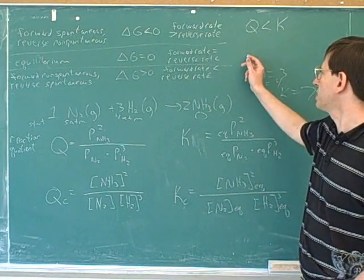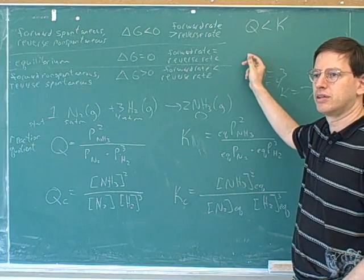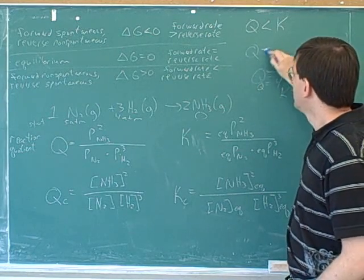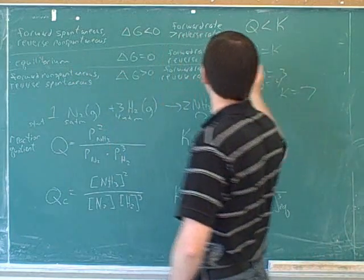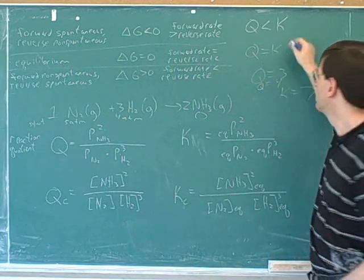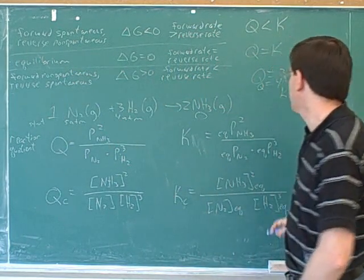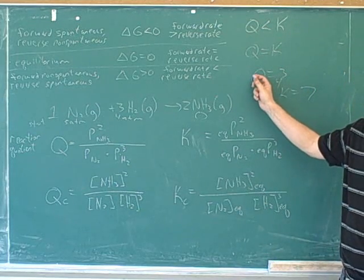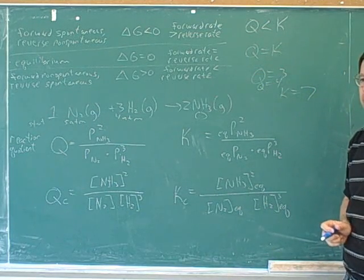So what would be the relationship between Q and K in this row? Q equals K. Right. Why would the net reaction stop only if you reached your destination? So in this case, when would we reach equilibrium? What would Q have to be for us to reach equilibrium? Seven. Seven.